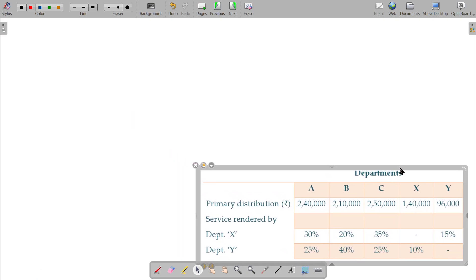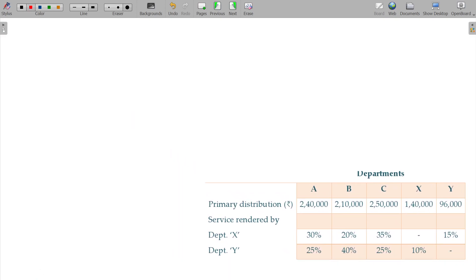I am going to solve this under simultaneous equation method. We have A, B, C, X and Y. Overhead as per primary distribution: for A 2 lakhs 40, for B 2 lakhs 10,000, for C 2 lakhs 50, for X 140, for Y 96,000.